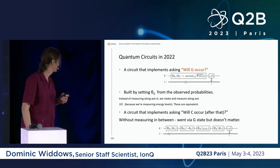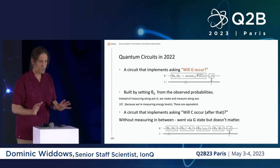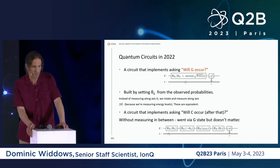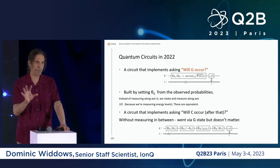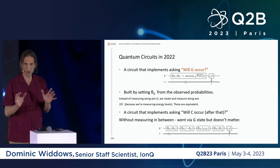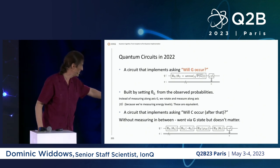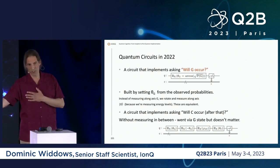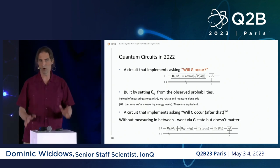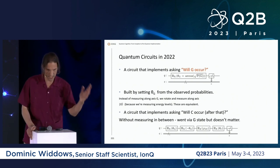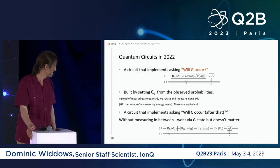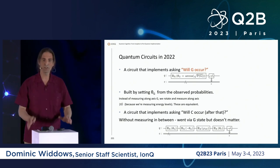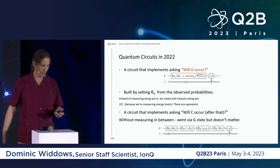Here's a circuit that implements asking 'will C occur — will someone say Clinton is trustworthy?' after a previous question, without measuring what happened in between. The crucial difference is whether you asked the question in between. This circuit composes a bunch of rotations to end up in the G state, then at the end you measure to find the probability of that outcome. Please read the Entropy paper for the full derivation of why the circuit looks the way it does.